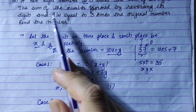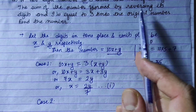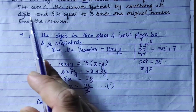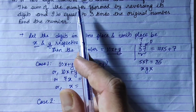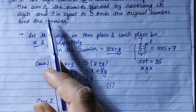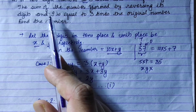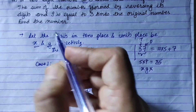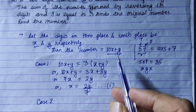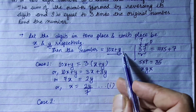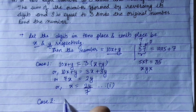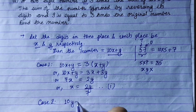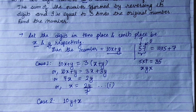Now for the second condition: the number formed by reversing its digits. The reversed number is 10y plus x. The sum of the original number and the reversed number involves 9.